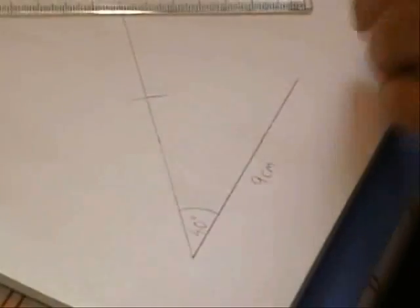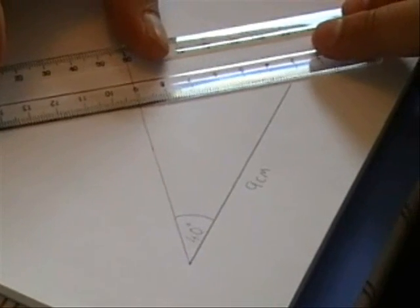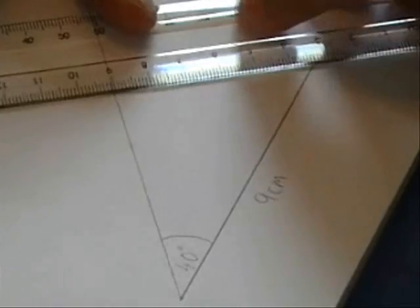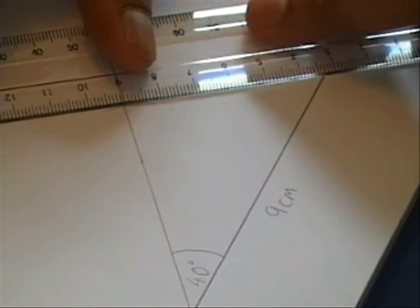And then what we do is simply where the arc on the line cross and the bottom base is simply draw the straight line.